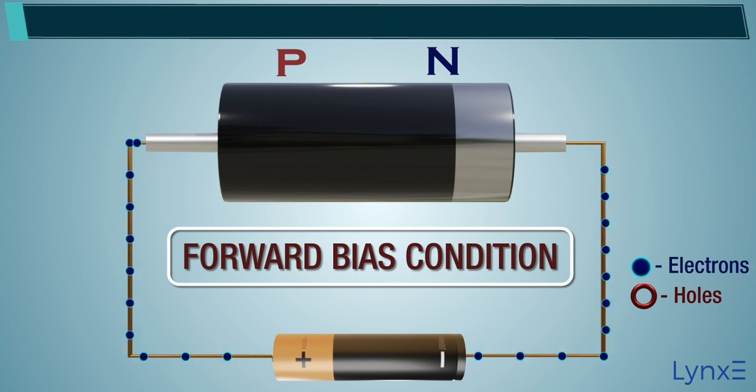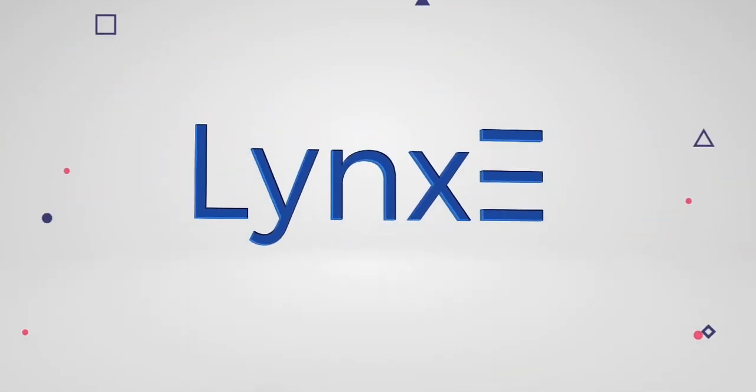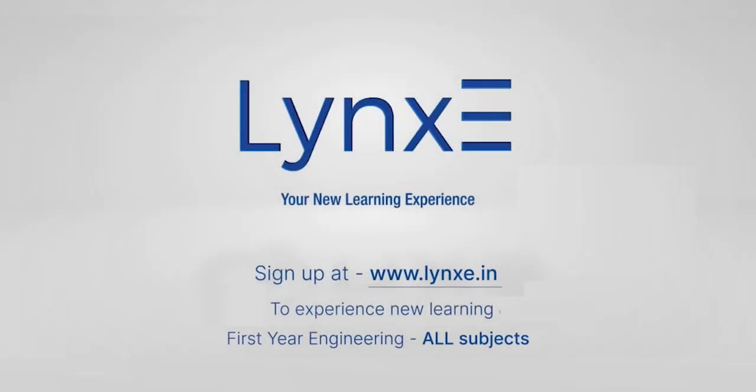This condition is known as direct polarization or forward bias condition of the diode. To know more, sign up to www.linksy.in.